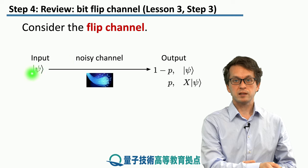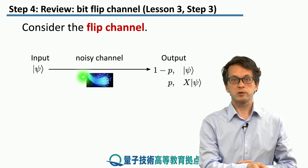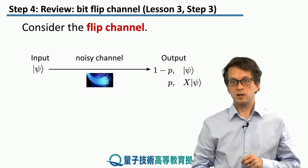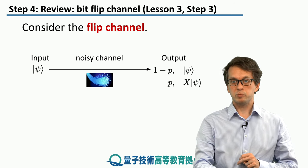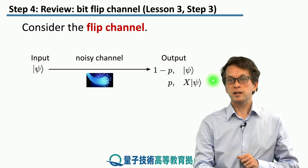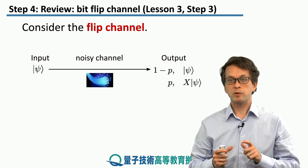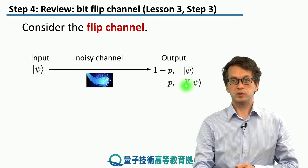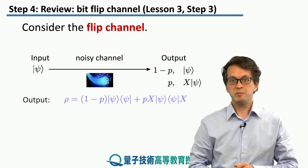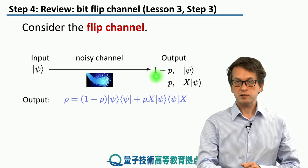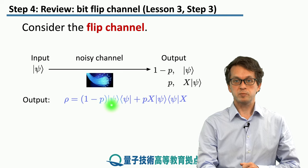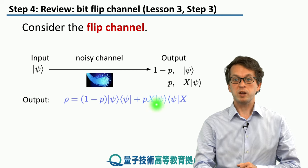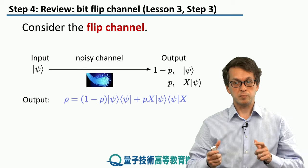We have our input pure state psi, and let's say that it travels through a noisy channel represented by a noisy fiber. At the output we can get two outcomes. One is the intended pure state psi, obtained with probability 1 minus p. The other is a different state where we apply the flip operation represented by the Pauli X matrix — with probability p we get a flipped state X times psi. Mathematically, we represent this output as a density matrix: with probability 1 minus p we have our intended state psi, and with probability p we have the state psi flipped.